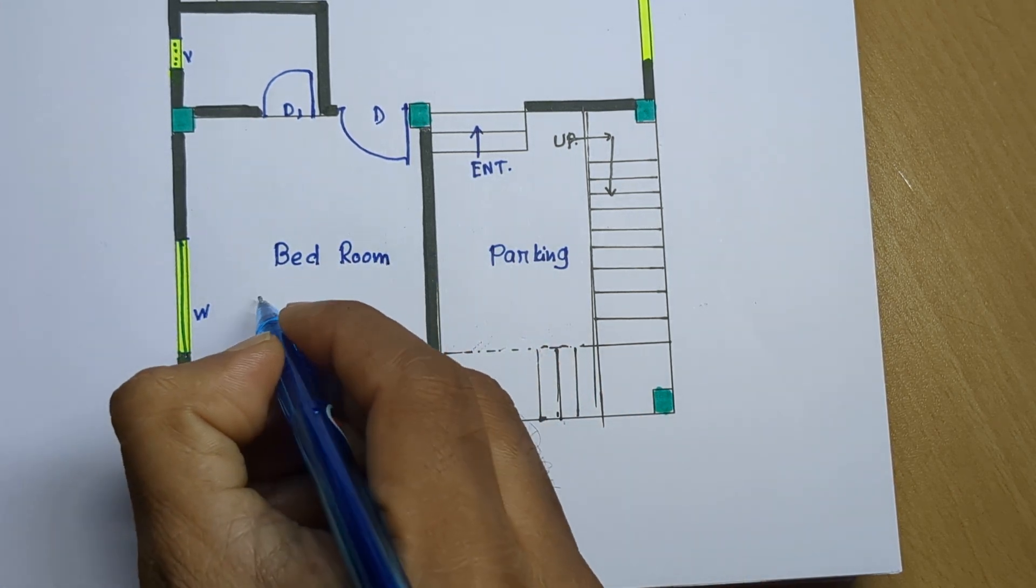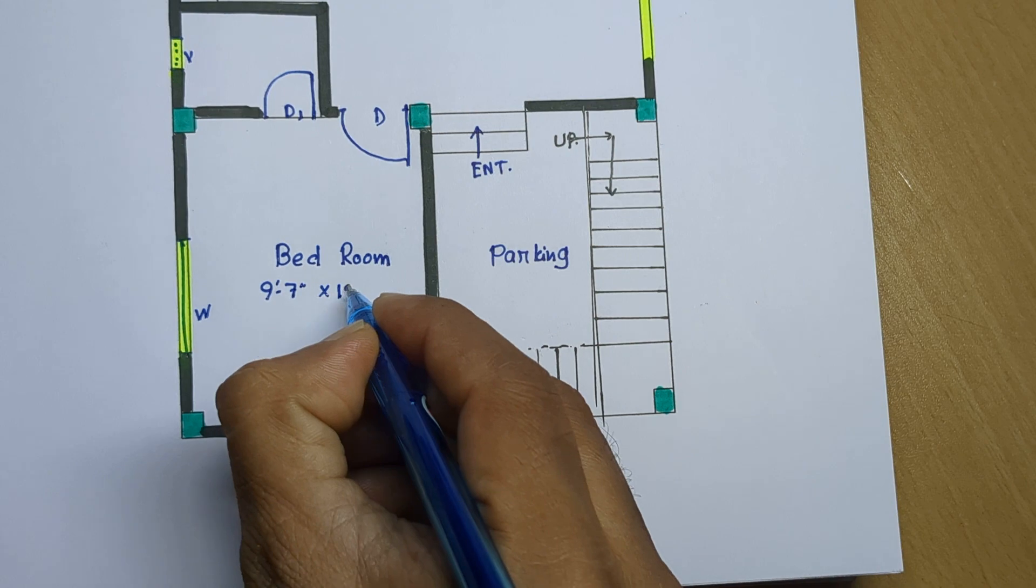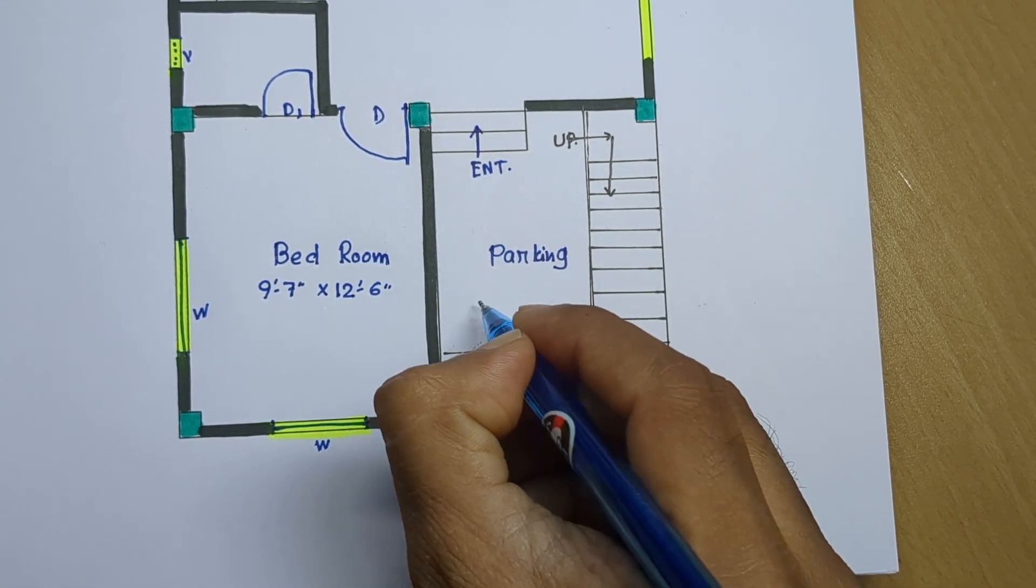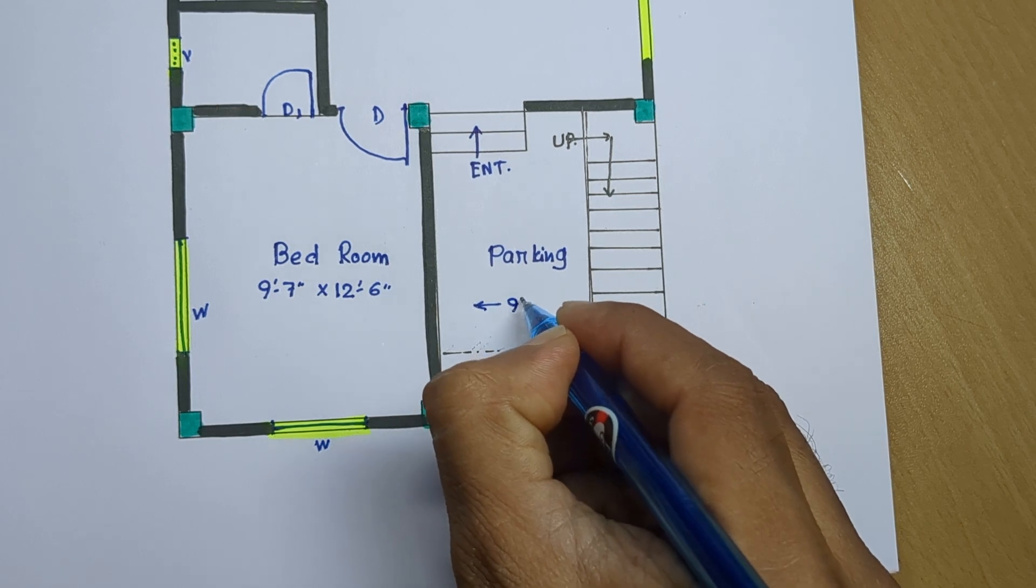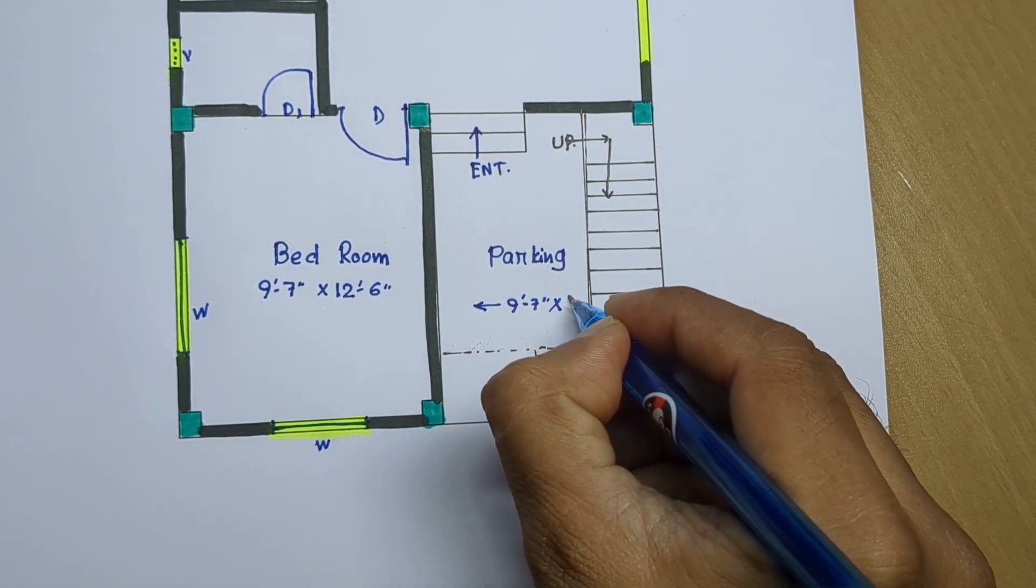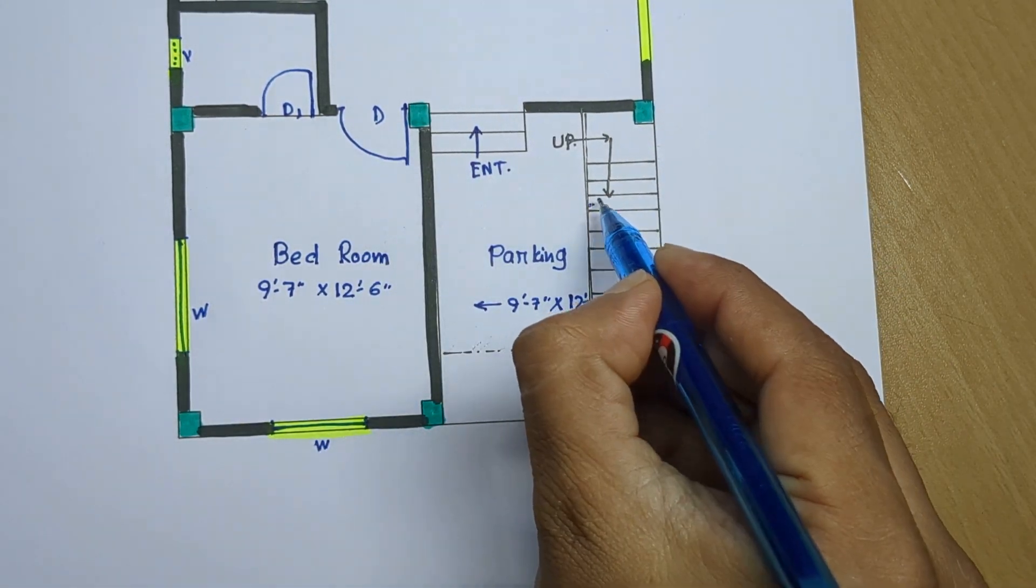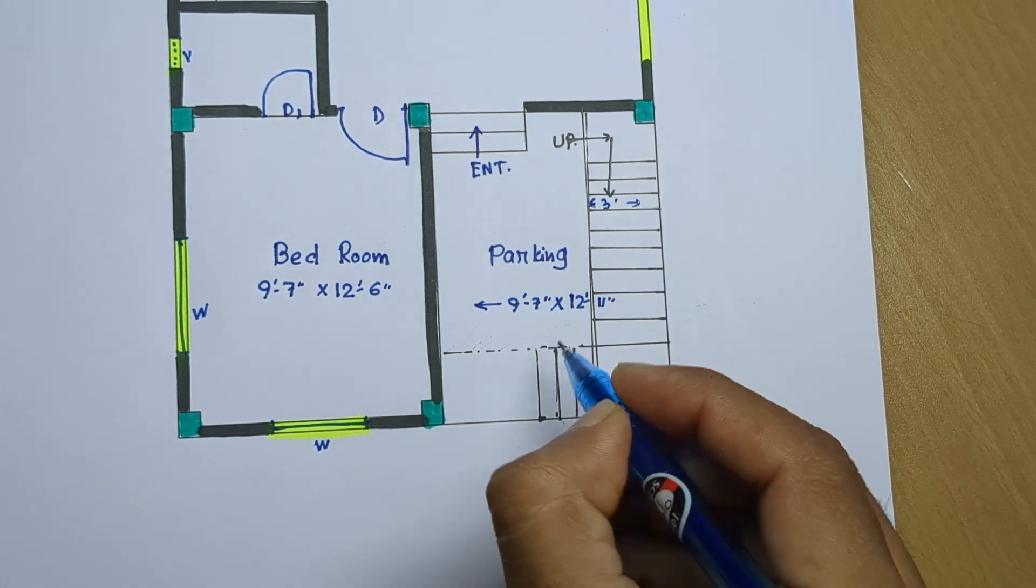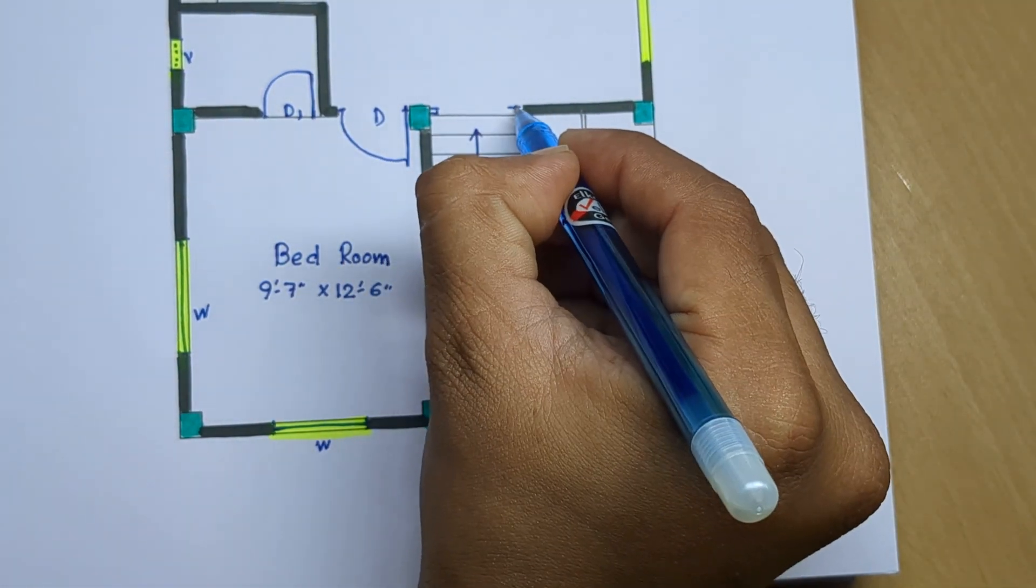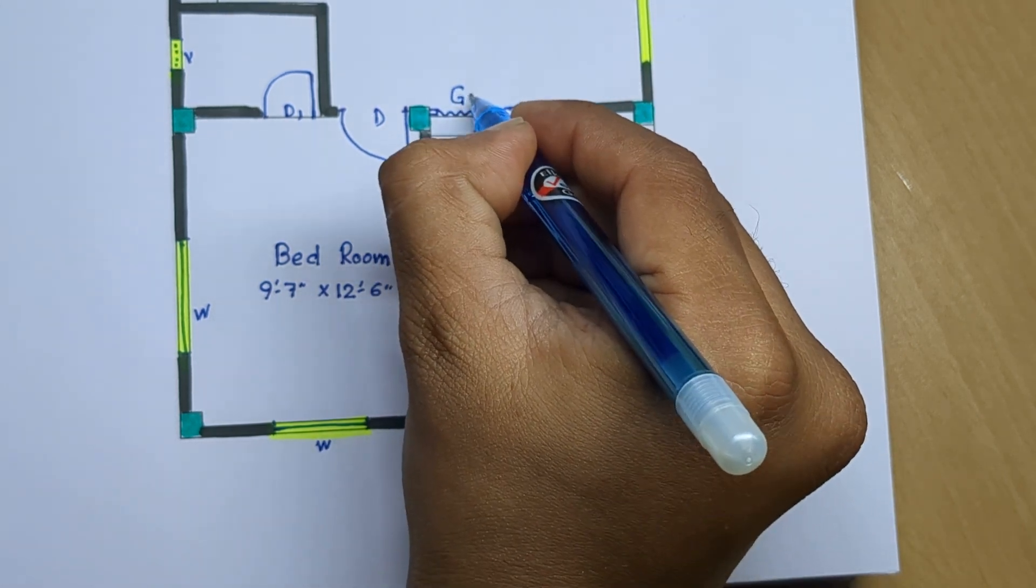Bedroom 9ft 7 inch and 12ft 6 inch. 9ft 7 inch 12ft 11 inch total length. 3ft 3ft entry, gate add club stable gate.